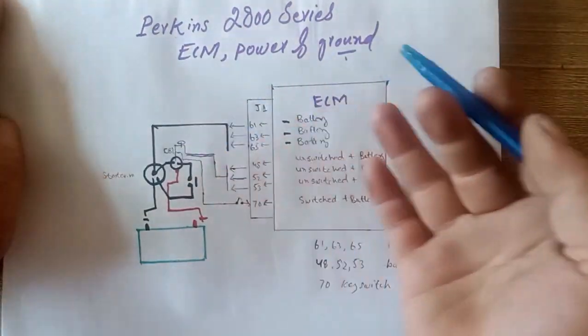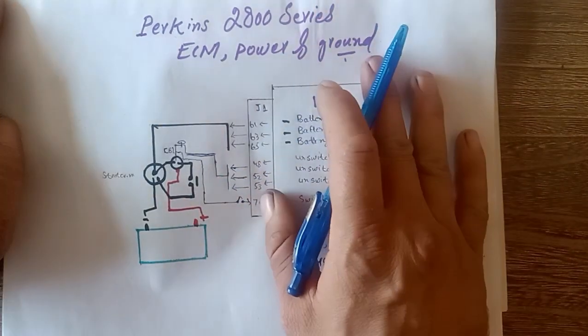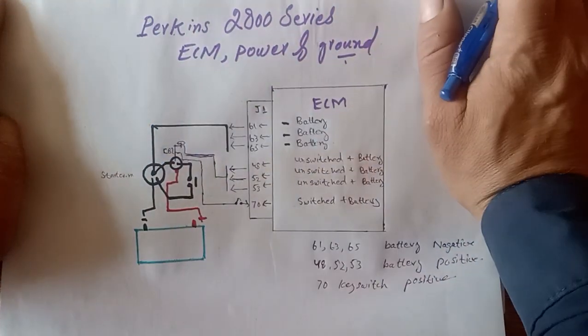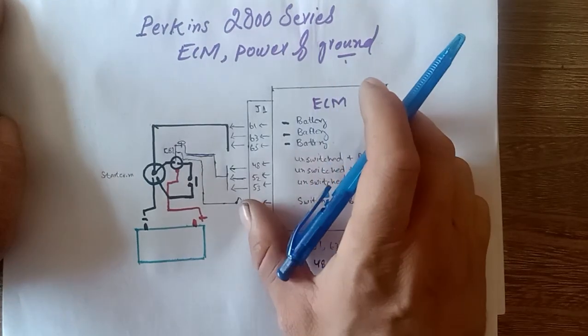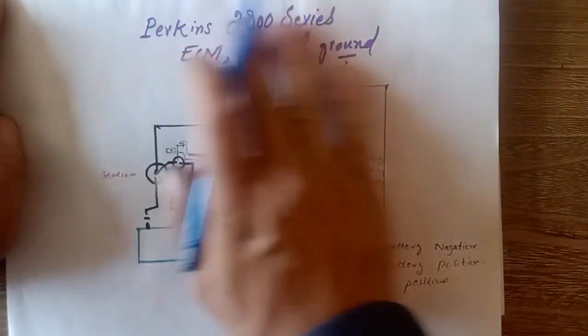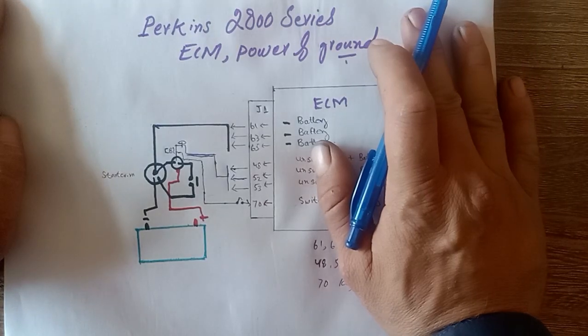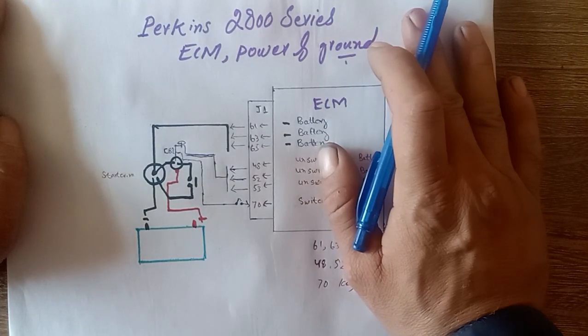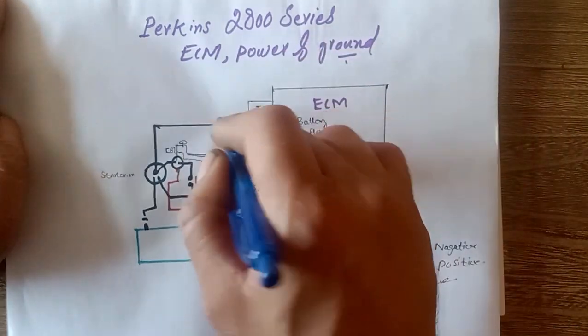How to check the ECM power and ground? Which is the numbering of power and ground? If your ECM is not turning on, not waking up, that means your engine will not start. First of all, it is very important to make sure ECM is turning on right now.